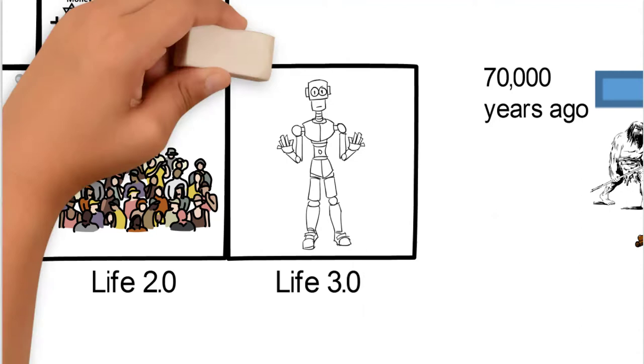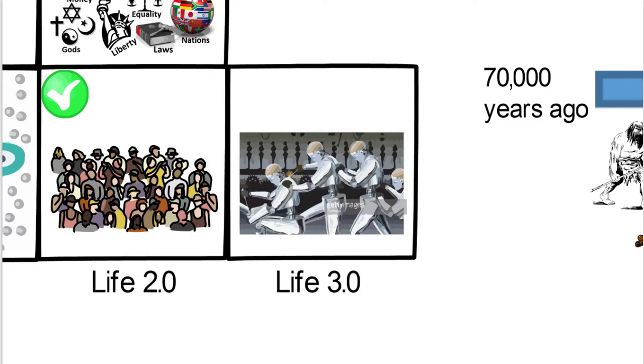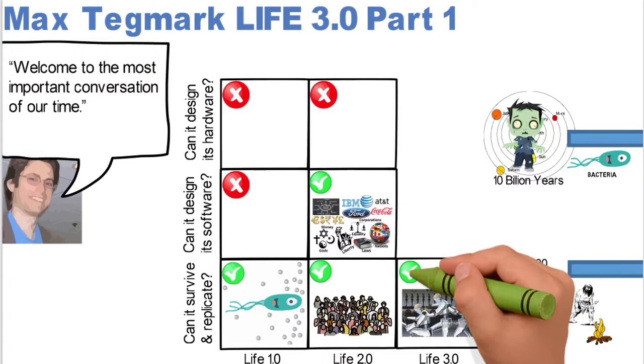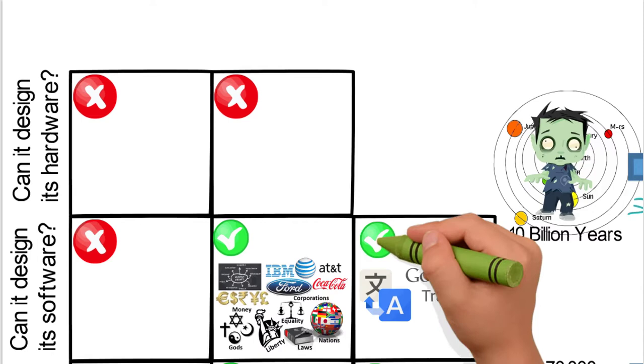And he says the thing Life 3.0, it's not really about a robot, but it's really about the ability, since it has to be able to replicate, it's where technology can actually also survive and replicate itself. And so that's what he's calling Life 3.0.